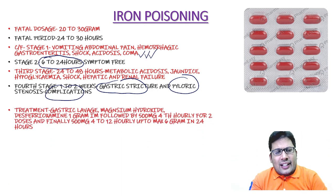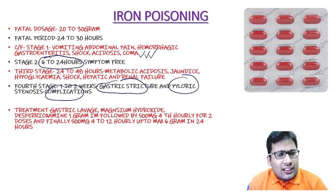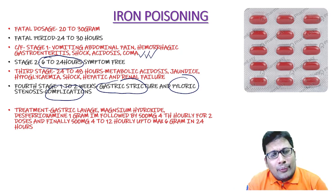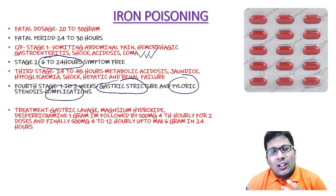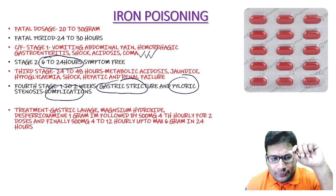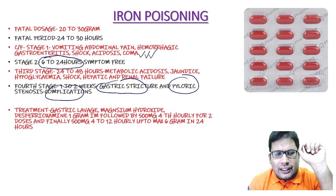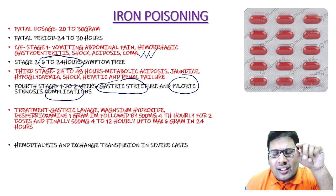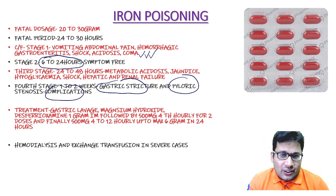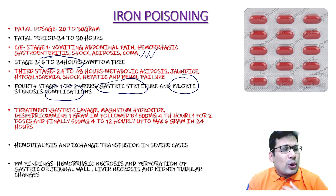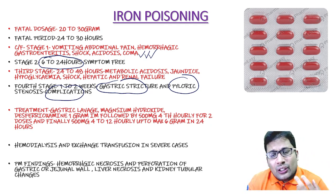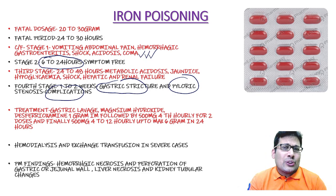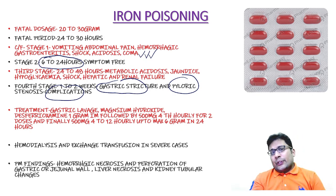Treatment according to standard textbook: gastric lavage, magnesium hydroxide, desferoxamine 1 g intramuscularly followed by 500 mg fourth-hourly for 2 doses, then 500 mg 4–12 hourly up to 6 g per day. Haemodialysis is also a treatment option; exchange transfusion can be done in severe cases. Post-mortem findings: haemorrhagic necrosis, perforation of the gastric and jejunal wall, liver necrosis, and kidney tubular necrosis.